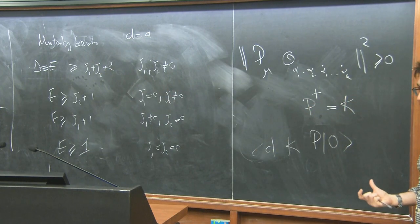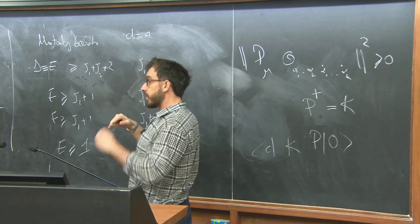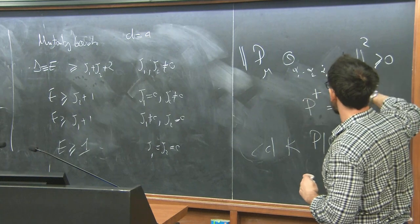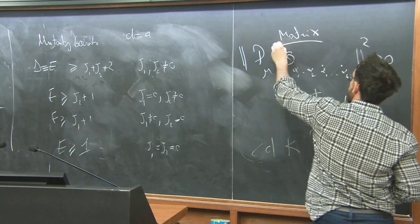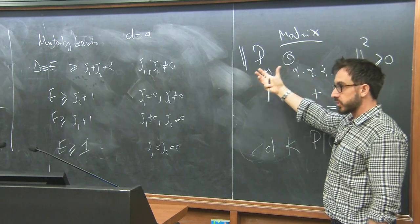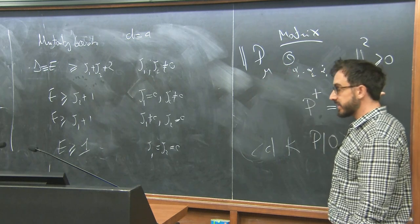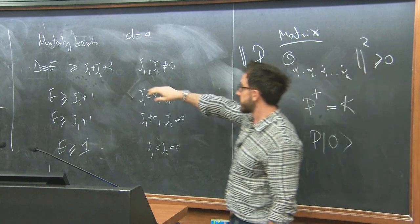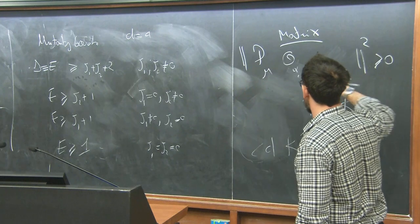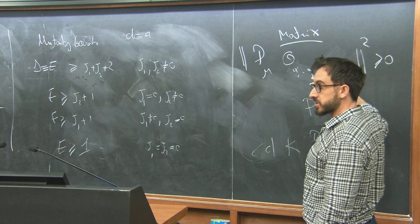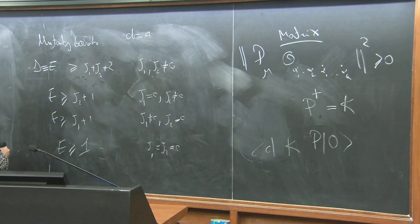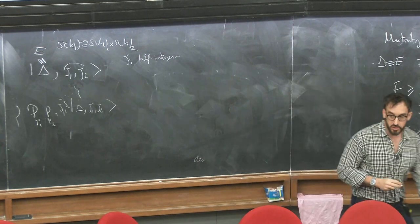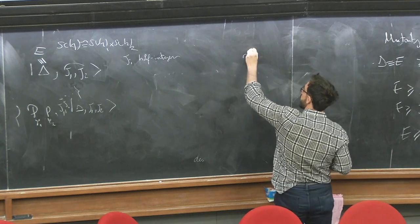It also follows from this way of introducing unitarity bounds that if the unitarity bound is saturated, you are in the critical case where there is a certain null state. This is a whole matrix because there are choices of indices. The statement that you're saturating the unitarity bound means you'll find a certain linear combination of states of this kind which has zero norm. If you go through this exercise, you discover that the combination acquiring zero norm is one where you contract precisely one alpha and one alpha-dot index.